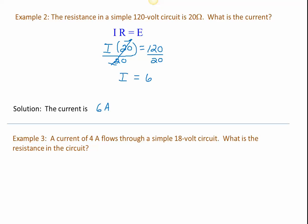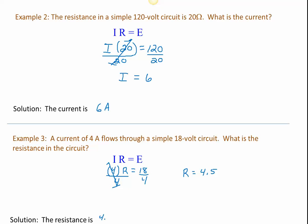For our third example, we have a current of 4 amps flowing through a simple 18-volt circuit. We would like to know the resistance in the circuit. We start with Ohm's Law: I times R equals E. I equals 4, R is unknown, and E equals 18. To get R by itself, we divide both sides by 4. On the left, 4 divided by 4 is 1, leaving R alone. On the right, 18 divided by 4 is 4.5. The resistance in the circuit is 4.5 ohms.